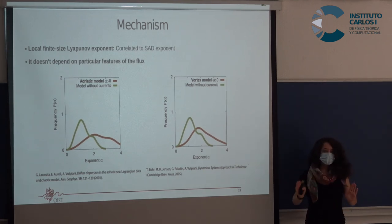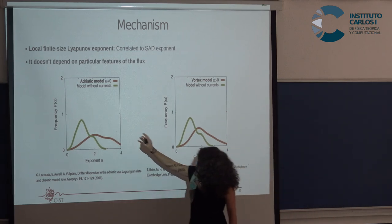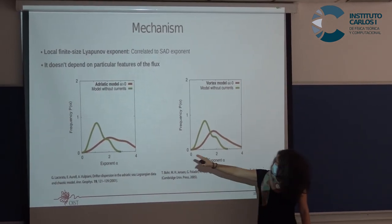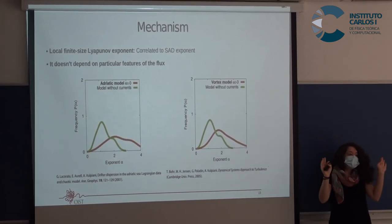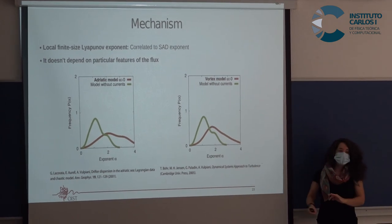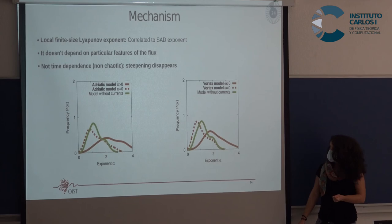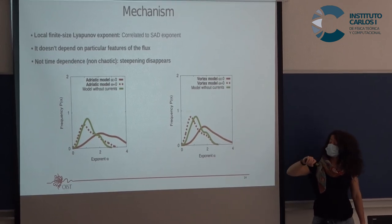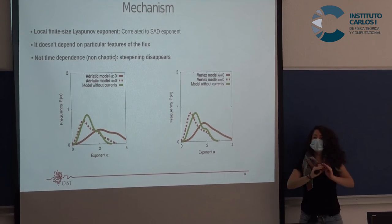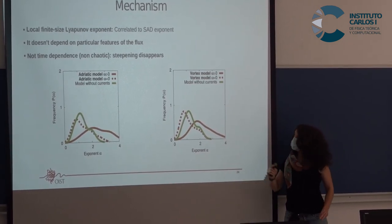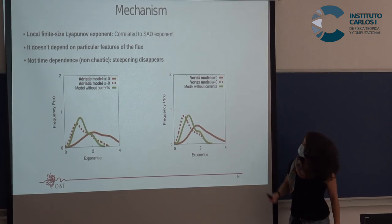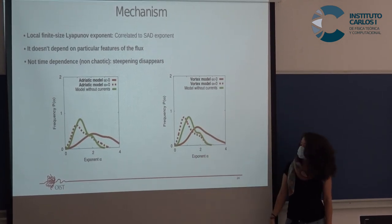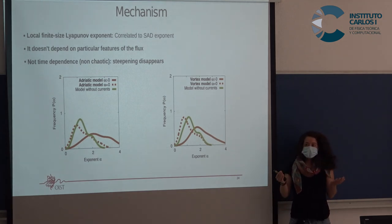This shows that the species abundance exponent is correlated with advection — specifically the barriers created by chaotic advection. And it doesn't matter which particular flux you use, as long as it has chaotic advection. We verified this with an Adriatic Sea model from the literature and with a simple vortex model — the simplest model for chaotic advection — and obtained the same behavior. When we set the time-dependence parameter to zero, removing chaotic advection entirely, the exponent reduces back to the level seen without currents, confirming that chaos is the cause.